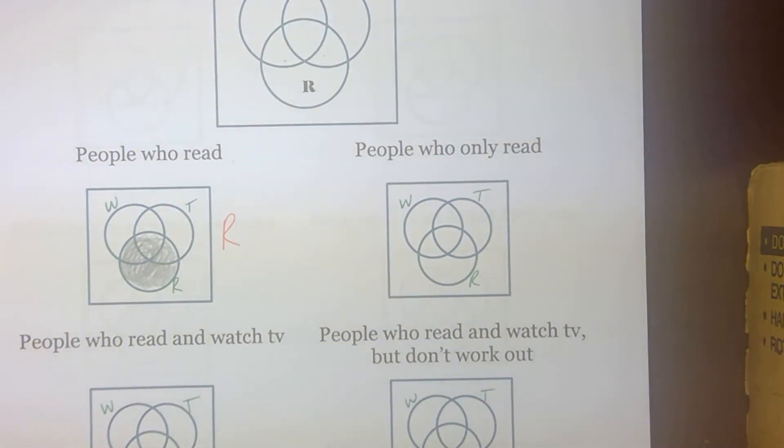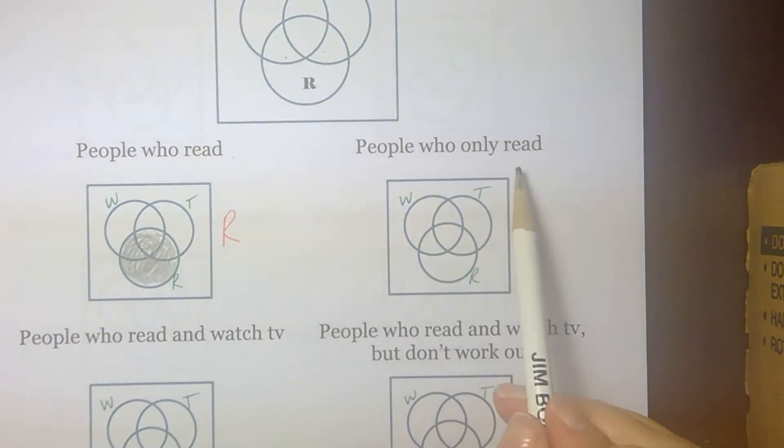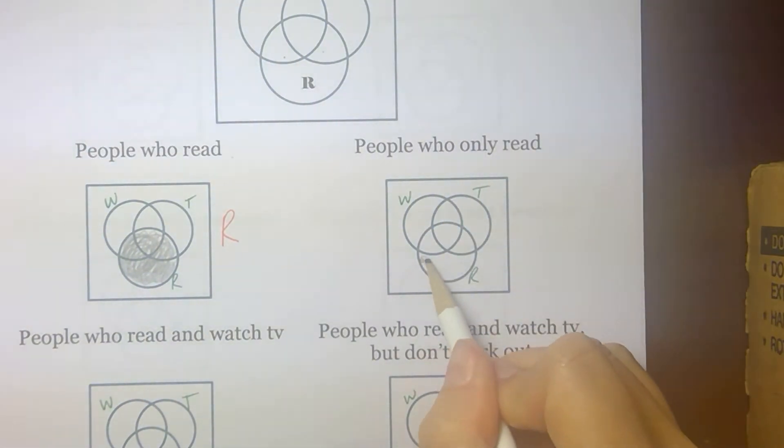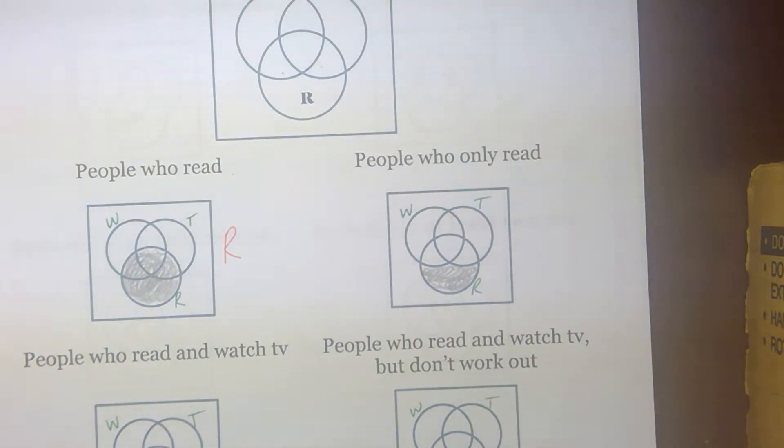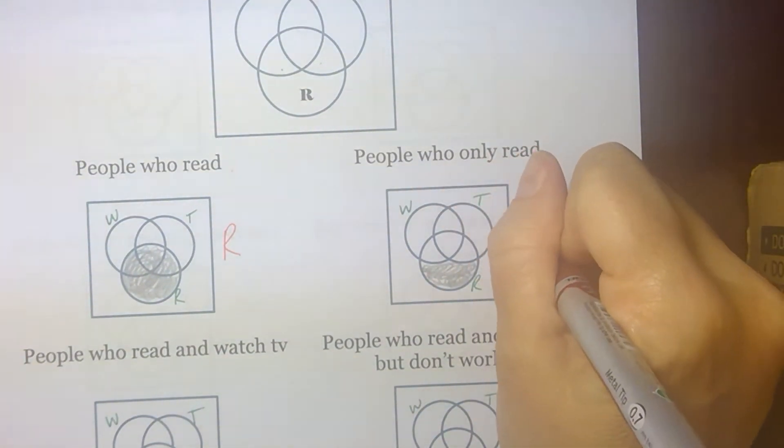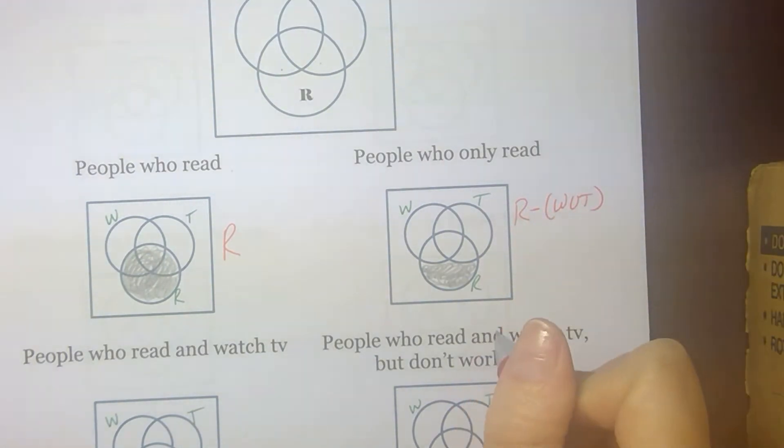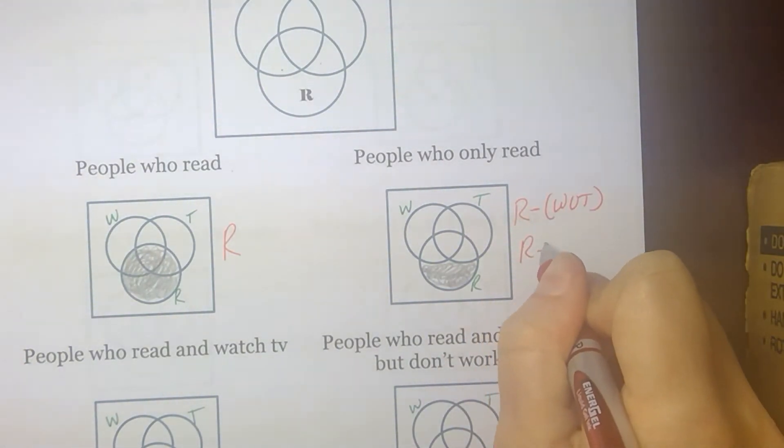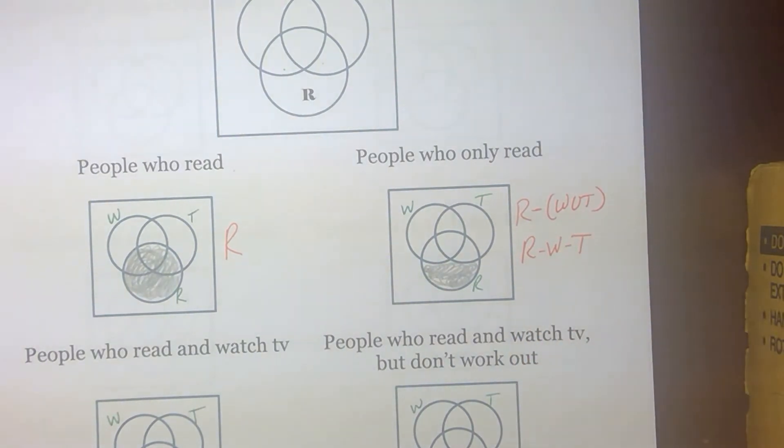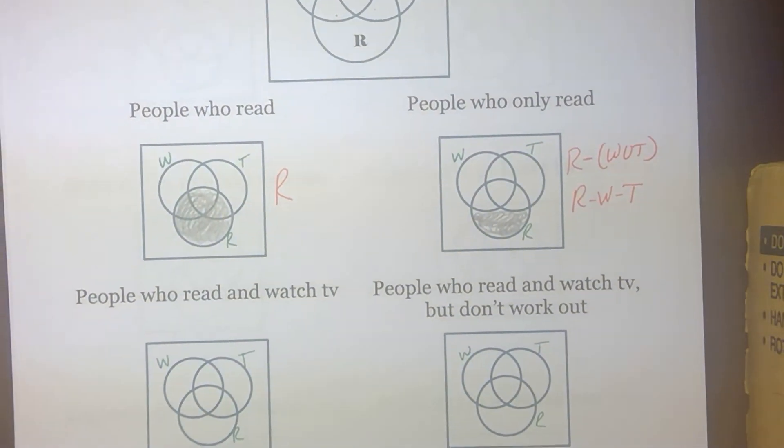People who only read. Now we're interested in they don't do these other two things. So they're just in the R loop. They're not in the other loops. People who only read would be represented by R minus W or T. Or I could say R minus W minus T. Either one of those would work notation-wise.